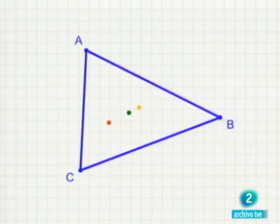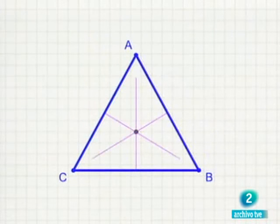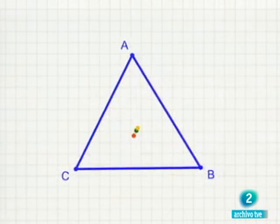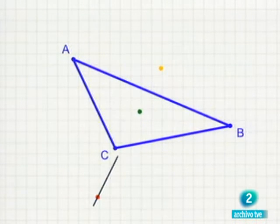Si el triángulo es equilátero, es decir, tiene sus tres lados iguales, los tres puntos coinciden. Pero si los tres lados son diferentes, son tres puntos distintos. Estos hechos se conocían desde hacía más de 2000 años.